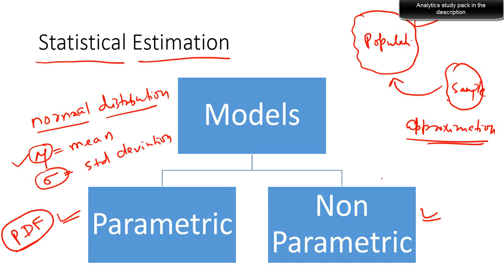That's not possible in the case of non-parametric estimation — you won't have parameters such as mu and sigma. Non-parametric estimation is useful when there is no functional form involving parameters for the probability distribution function. If that doesn't exist, you go ahead with non-parametric distributions. One basic difference is that you do not get any parameter out of this estimation.